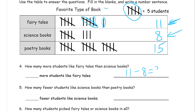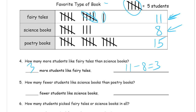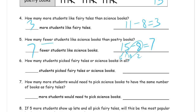How many fewer students like science books than poetry books? Science books had eight favorites and poetry books had fifteen, so science books is fewer. The difference is 15 minus 8. You could use a take-from-ten strategy: ten minus eight leaves two, then add the two and five back together for seven. Seven fewer students like science books.